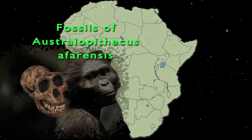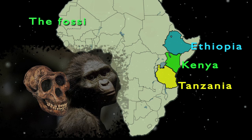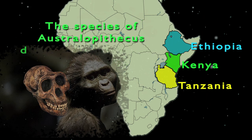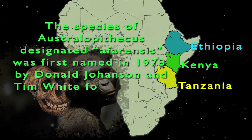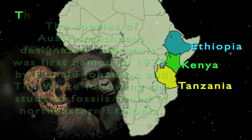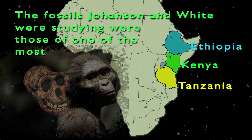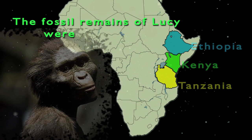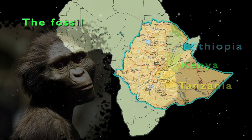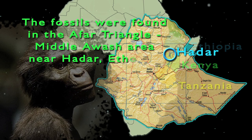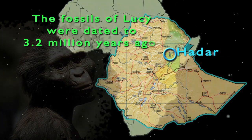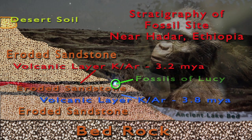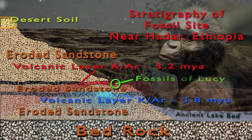Fossils of Australopithecus afarensis have been discovered in Ethiopia, Kenya, and Tanzania, dated from 3.9 to 2.7 million years in the past. The species was first named in 1978 by Donald Johanson and Tim White following the study of fossils found in northeastern Ethiopia — including the famous Australopithecus afarensis christened Lucy. The fossil remains of Lucy were discovered in November of 1974 by Donald Johanson and Tom Gray in the Afar Triangle, Middle Awash area near Hadar, Ethiopia, and dated to 3.2 million years ago. This stratigraphy schematic gives a general idea of the soil layers at the site, with potassium-argon dating of volcanic layers being important in establishing the date of the fossils.